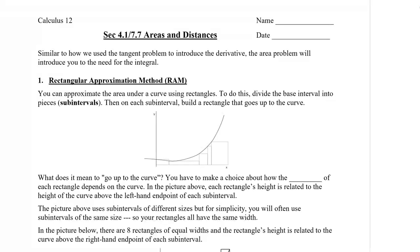We're going to start with the rectangular approximation method. You can approximate the area under a curve using rectangles. To do this, divide the base interval into pieces, which we'll call subintervals. Then on each subinterval, you're going to build a rectangle that goes up to the curve.